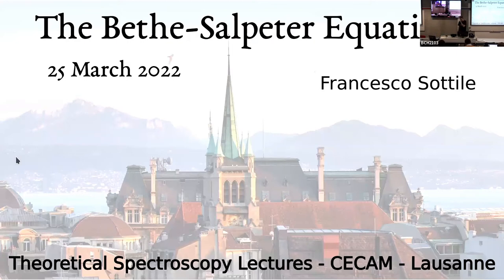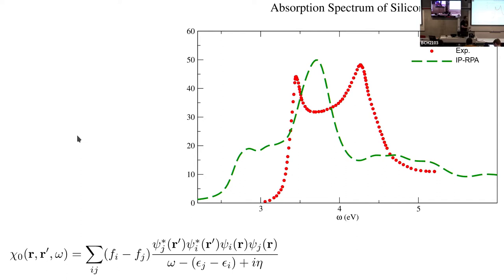The main motivation for going beyond TDDFT is accuracy. TDDFT is an exact theory for polarizability at linear order, second order, and in non-perturbative approaches. Unfortunately, we lack a good functional to describe optical absorption, especially in solids. Simple molecules without strange features can work, but optical absorption in solids is not good enough. Even very fancy kernels beyond LDA don't give good results.